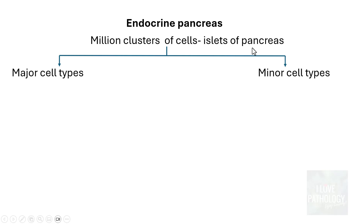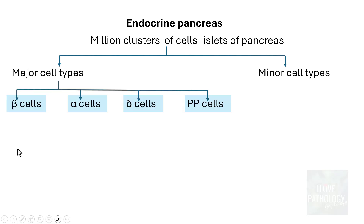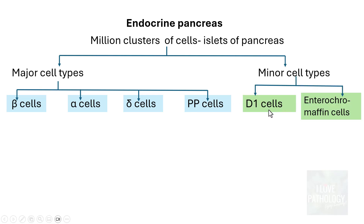The cells of islets of pancreas are classified into two types: major cell types and minor cell types. The major cell types are beta cells, alpha cells, delta cells, and PP cells. The minor cell types are D1 cells, enterochromaffin cells, and also G cells — we will talk about those a bit later.